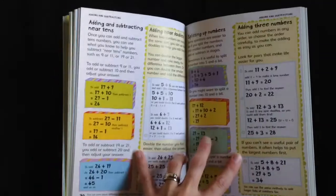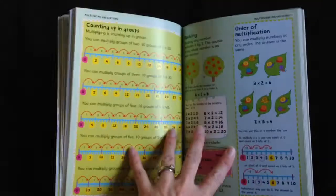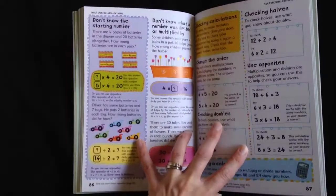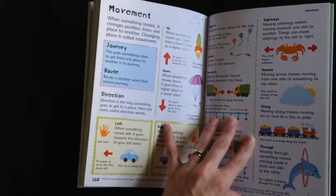Opposites. And as you can see, it's very colorful. It's got lots of little diagrams to help explain the concept. Checking halves. 3D shapes. Movement.